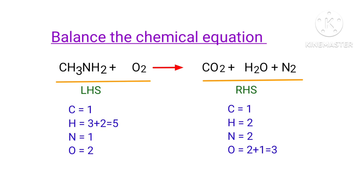The number of atoms are not balanced on both sides. To balance the chemical equation, we need to make use of coefficients. A coefficient is the number that we place in front of a chemical formula.